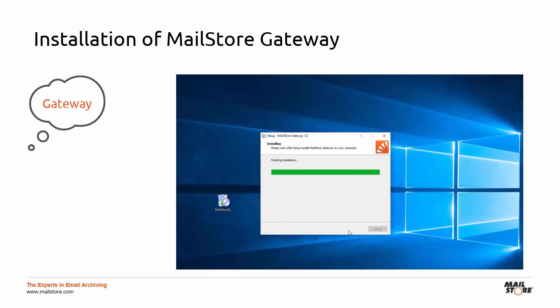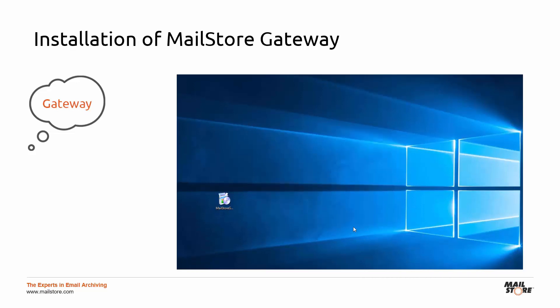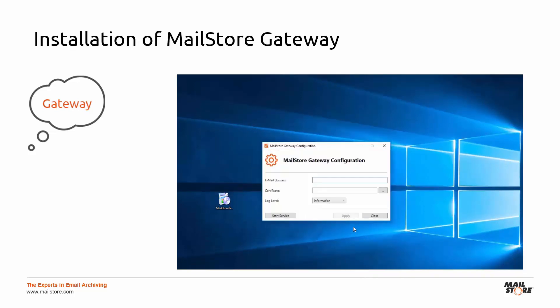Now click on Finish to open the MailStore Gateway configuration tool, which allows administrators to change basic settings and to configure the necessary settings for launching the MailStore Gateway service. The value in the field Email Domain is the domain part of the individual email address that is generated for every MailStore Gateway mailbox.